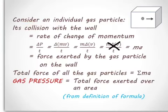Consider an individual gas particle, this one here. Its collision with the wall is equal to the rate of change of momentum of that particle. So this particle moves towards the wall, collides with it, and bounces back. So it undergoes a change of momentum during the process.